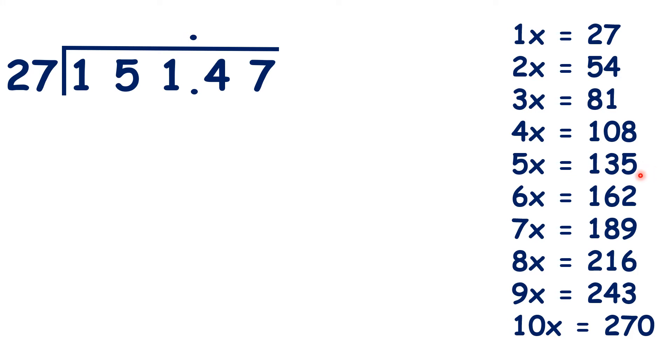We can see that 5 times 27 is 135. So let's write 135 under the 151, and 5 in our answer.